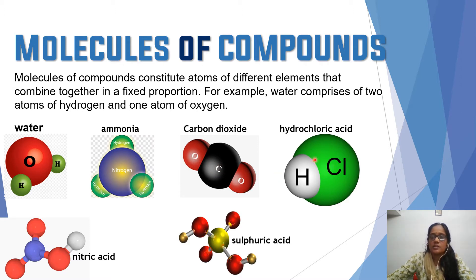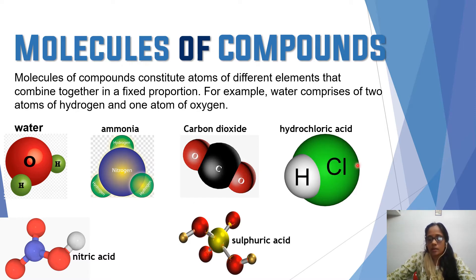And this is hydrochloric acid — one hydrogen and one chlorine. So what is the atomicity? The atomicity is two. And for carbon dioxide, one carbon and two oxygen, so the atomicity is three. Here also atomicity is three, and here also atomicity is three.